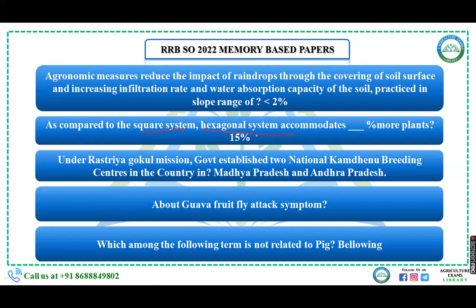The hexagonal system of planting in orchards accumulates more than 15 percent more plants compared to the square system. Under the Rashtriya Gokul Mission, the government established two national Campiline/cattle breeding centers in Madhya Pradesh and Andhra Pradesh. A question was also asked regarding guava fruit fly attack symptoms.